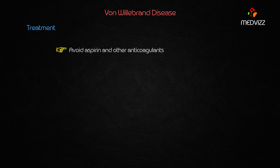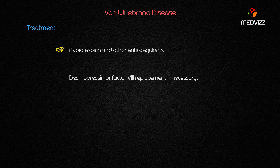Treatment includes avoiding aspirin because it inhibits the COX pathway, and avoiding other anticoagulants. Desmopressin is considered the treatment of choice for von Willebrand disease. In most severe or advanced cases, Factor 8 replacement is indicated if necessary.